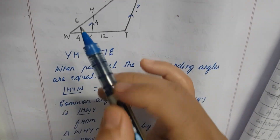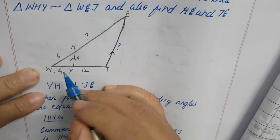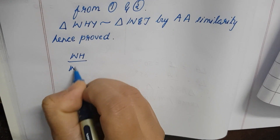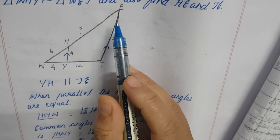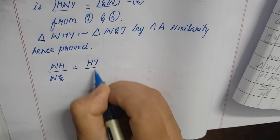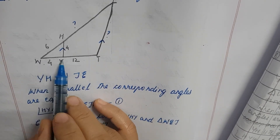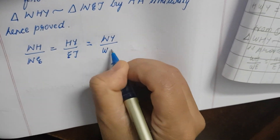Since triangle WHY is similar to triangle WET, the corresponding sides are proportional: WH divided by WE equals HY divided by ET equals WY divided by WT. We let WE equal X and ET equal Y, so the ratios become: WH/WE = HY/ET = WY/WT.